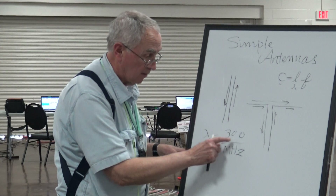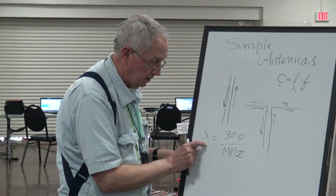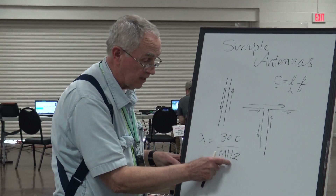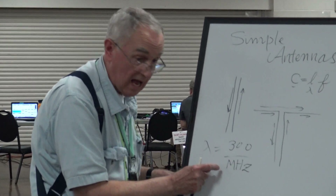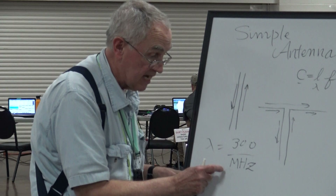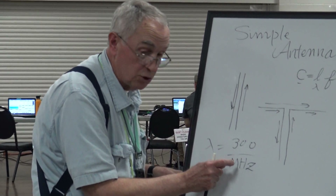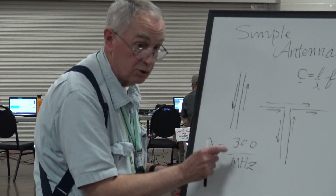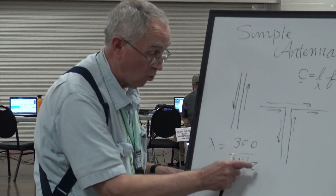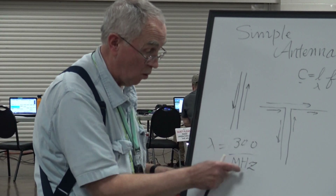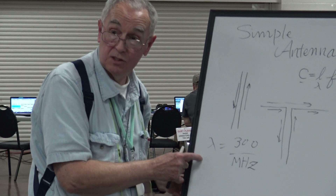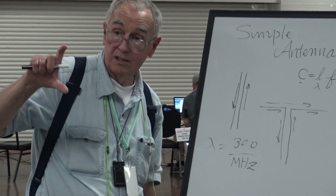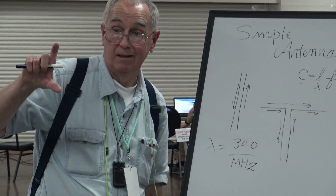Remember your formula. If you have a 2.4 gigahertz — that's 2,400 megahertz — what does that make this wavelength value? It's going to be very small.